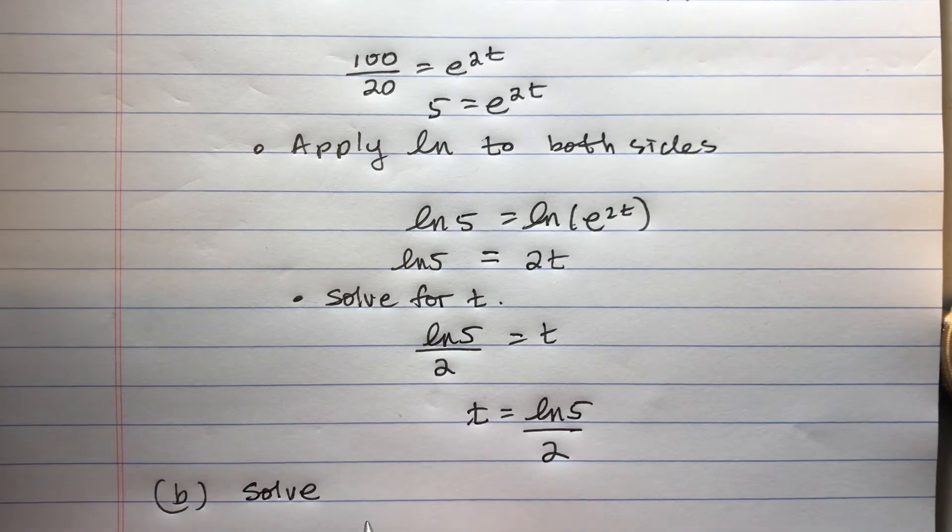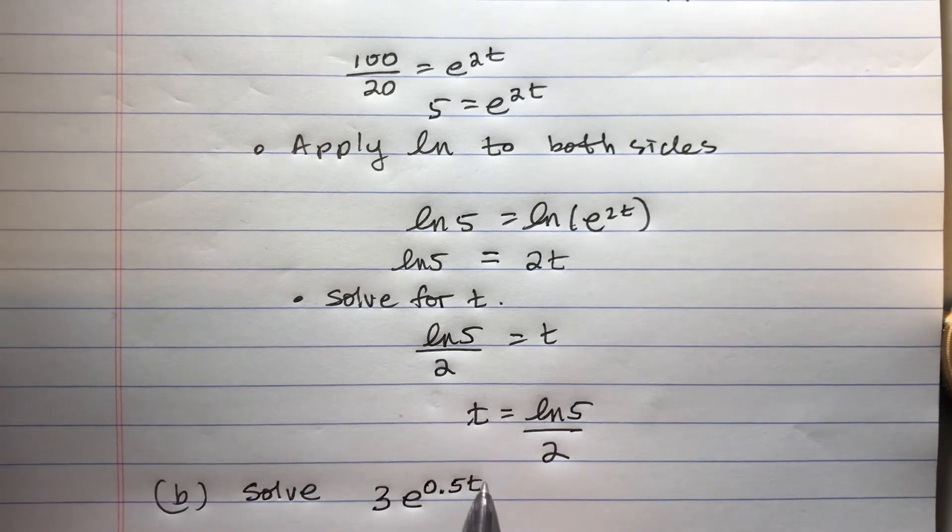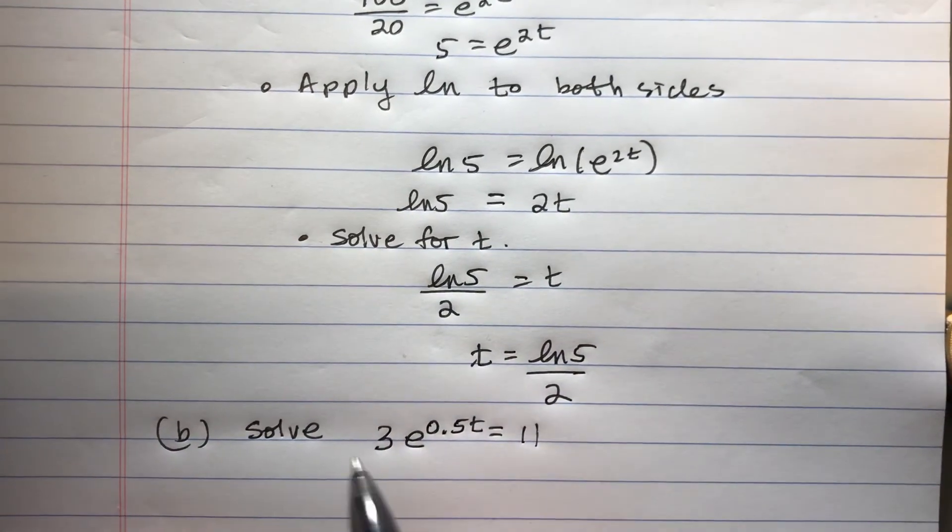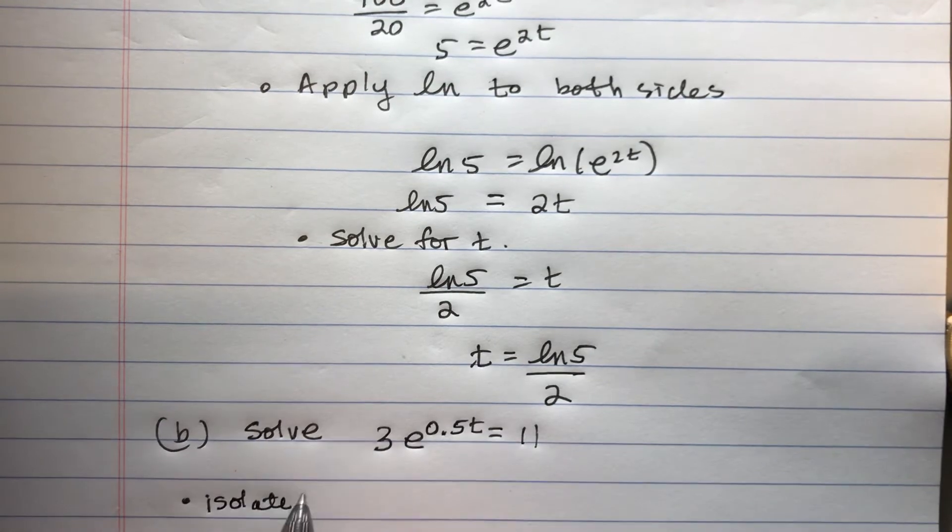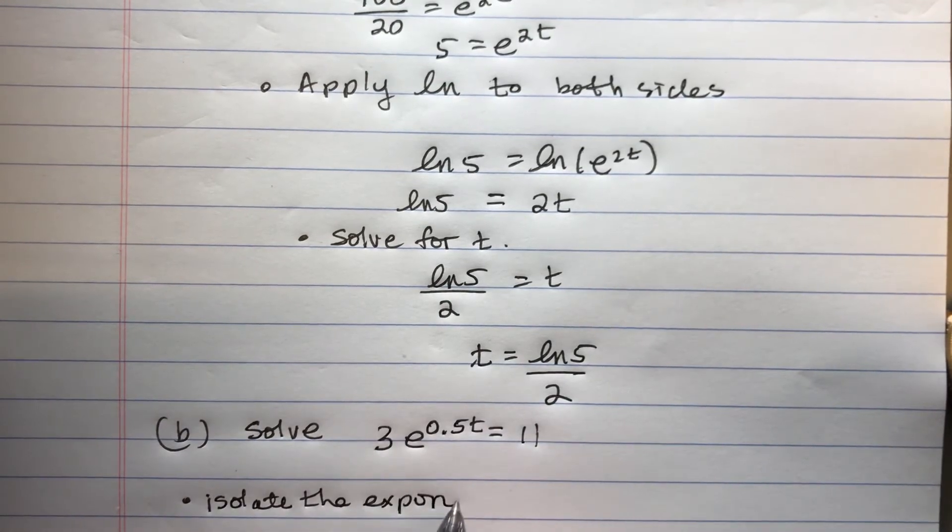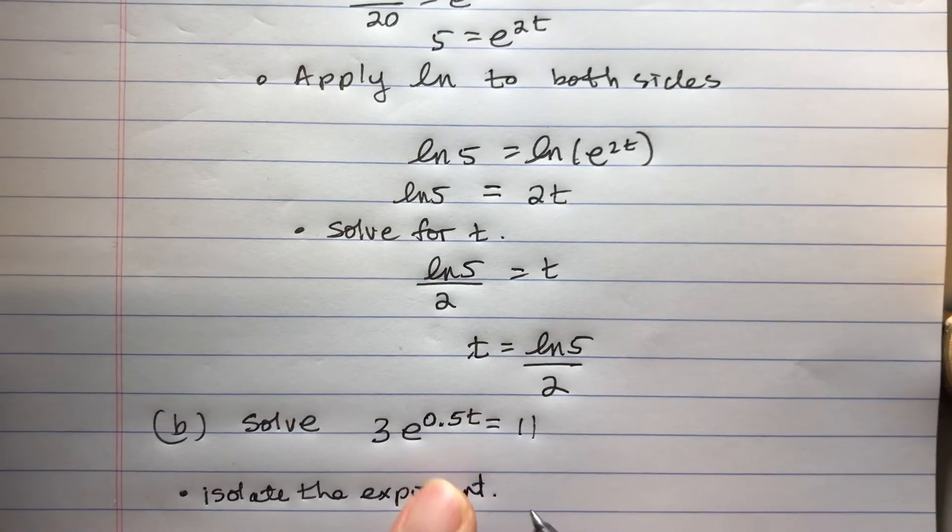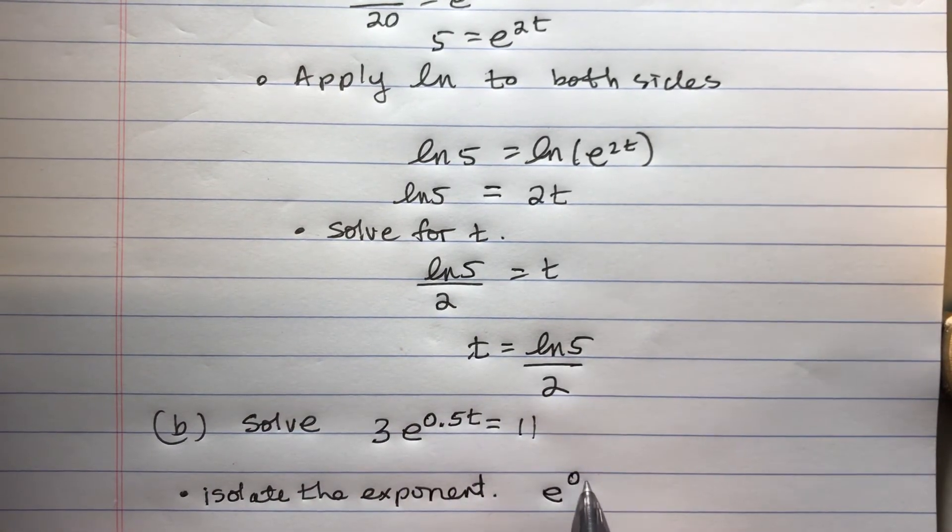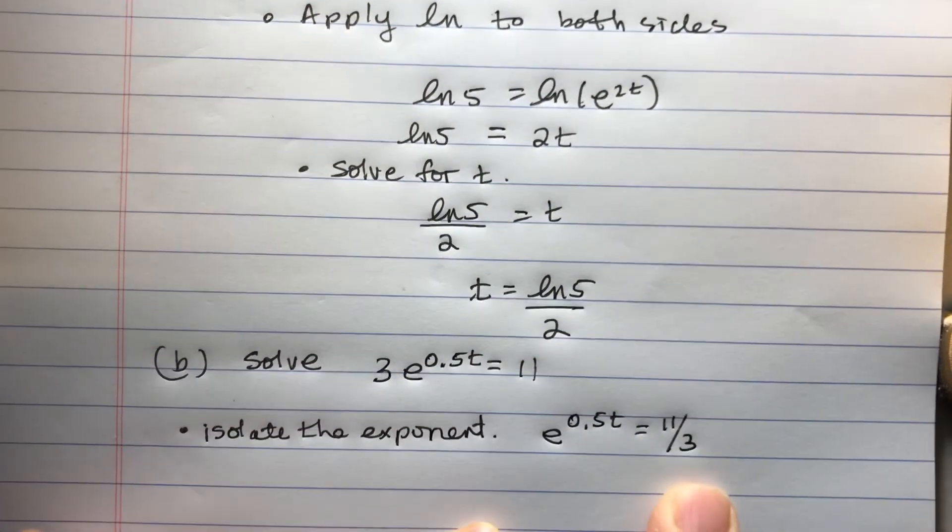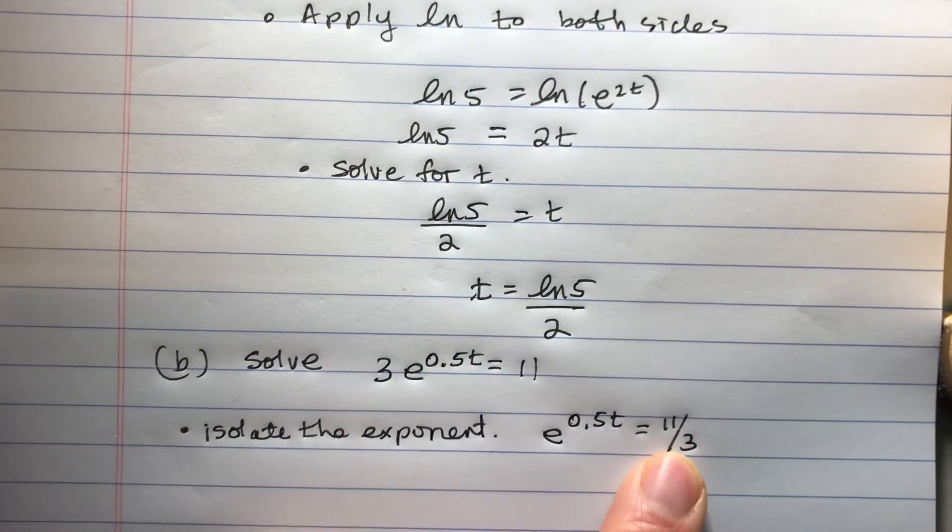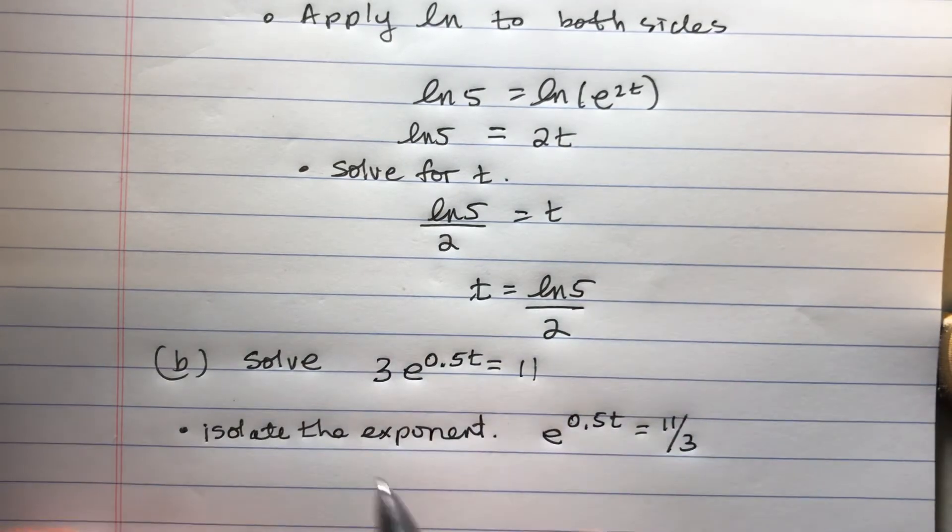I can try another one. Solve 3e to the 0.5t equals 11. So first, we want to isolate the exponent. That's my own wording. Maybe there's a better way to say that. But we want the exponent all by itself. Get a fraction. Why try to put a decimal? A decimal would have to be rounded. So don't do that.